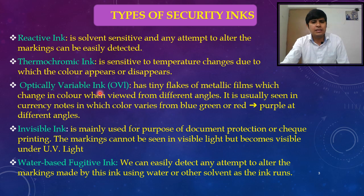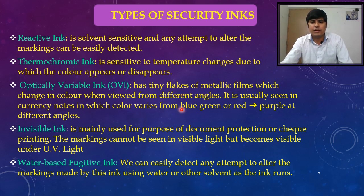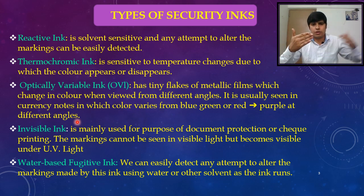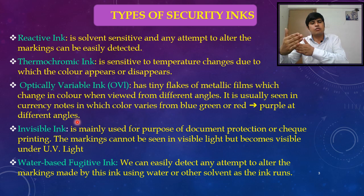The next class is optically variable ink (OVI). This ink has tiny flakes of metallic films which change in color when viewed from different angles. It is usually seen in currency notes, where the color varies from blue-green or red to purple at different angles. Viewing the currency note from one angle shows one color; from another angle, a different color appears.